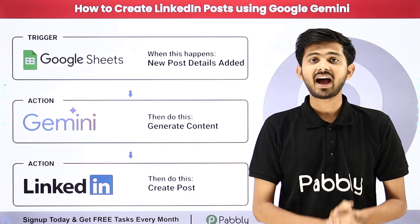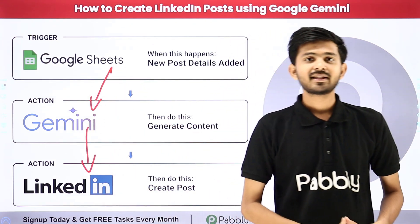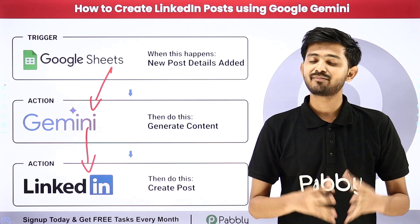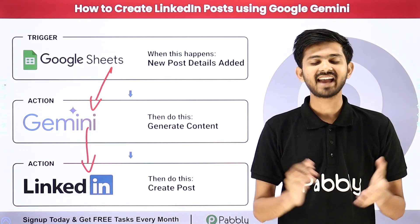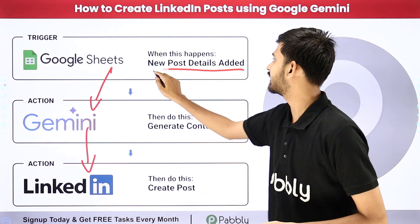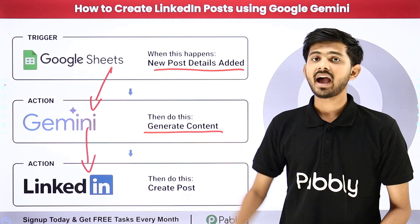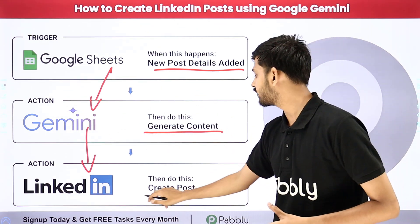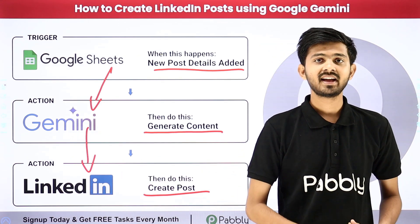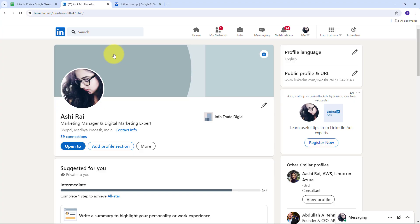For my objective I have to build a connection between Google Sheets, Google Gemini and LinkedIn. For building this connection I'm going to use Pabbly Connect, which is an amazing software for automation and integration. With Pabbly Connect, as I receive new post details added in my Google Sheet, I'll automatically generate content using Google Gemini and after generating that content I'll create new posts in LinkedIn. Let me take you to my computer screen.